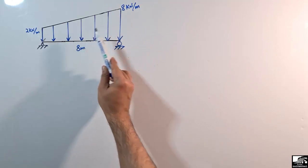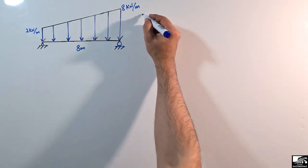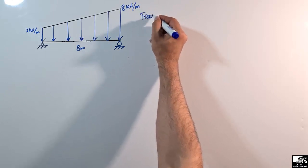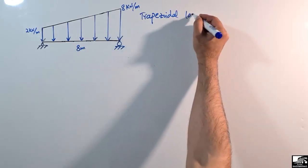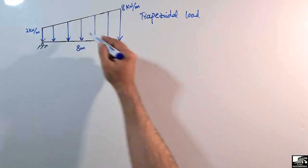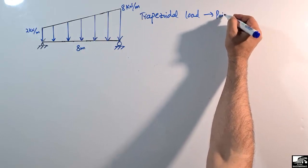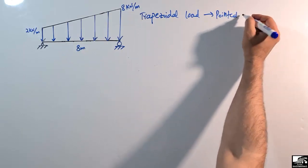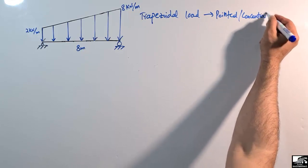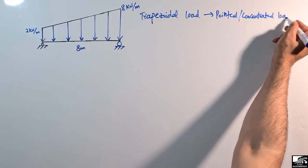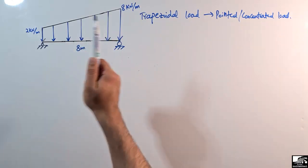We have to convert this trapezoidal load, or uniformly varying load, into a pointed or concentrated load. The question is: how do we do this, and at which point on the beam will this load act?